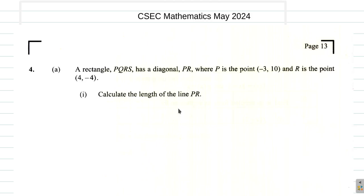We now are at question 4 of the May 2024 CSEC Mathematics paper. Part A says a rectangle PQRS has a diagonal PR. And P is the point (-3, 10) and R is the point (4, -4). Calculate the length of the line PR.